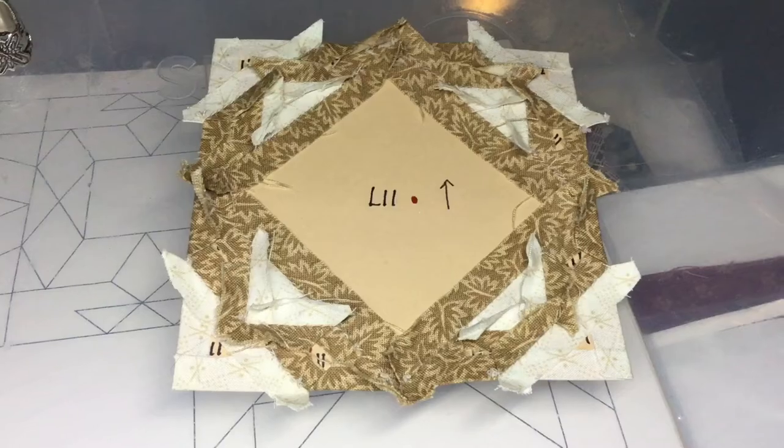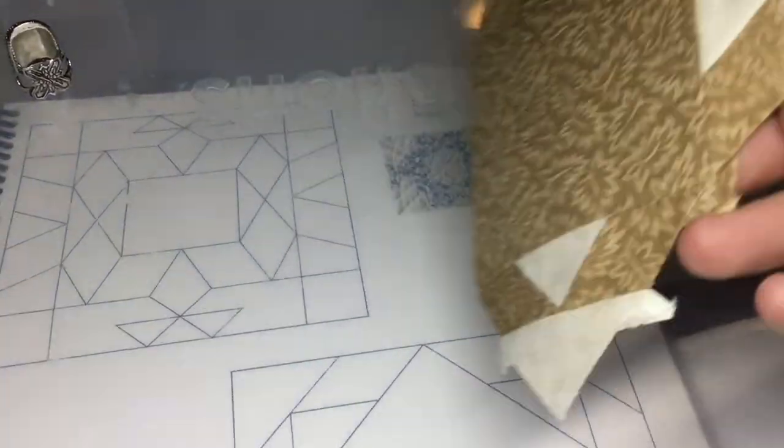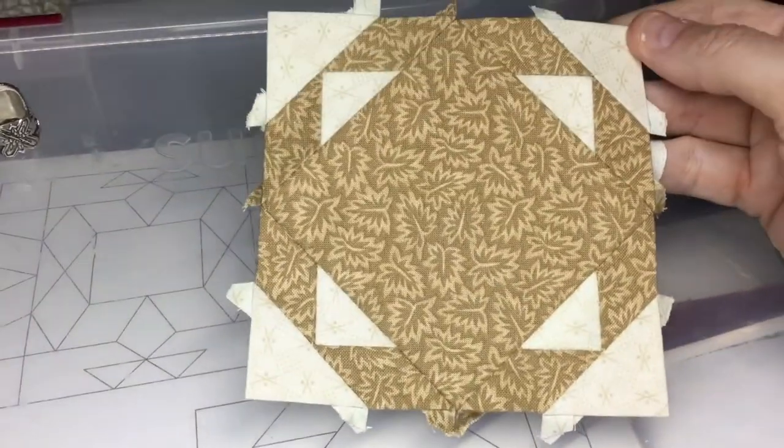So I've added the fourth corner to my center square, and now I have a completed L11 block.